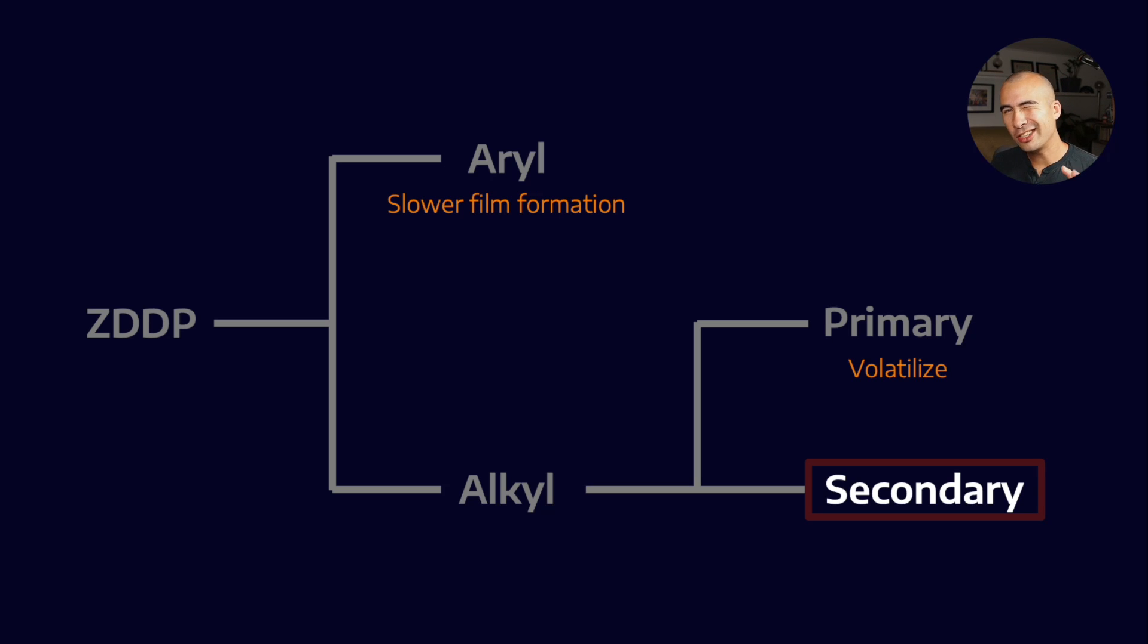But it's not even that simple, because when you compare secondary and primary ZDDPs, it seems that secondary ZDDPs form higher friction anti-wear films, right? And so that's detrimental to our fuel economy performance.